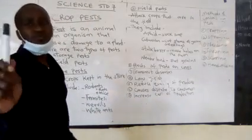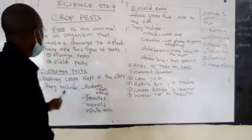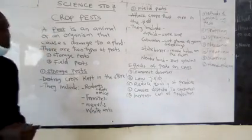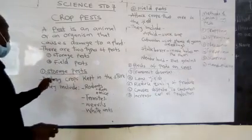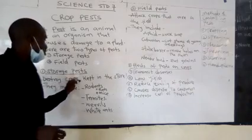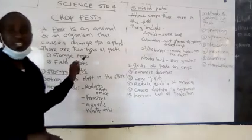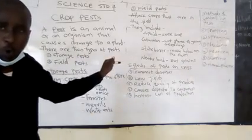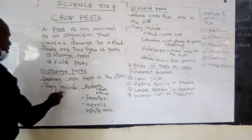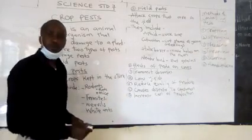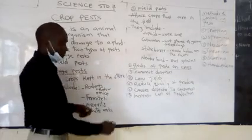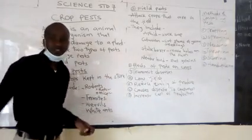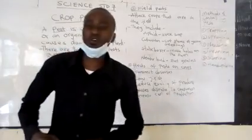Where do we find storage pests? Storage pests, we find them in stores. They destroy crops kept in the store. They include rodents. I hope you know rodents. For example, we have rats, we have mice. Those are examples of rodents.